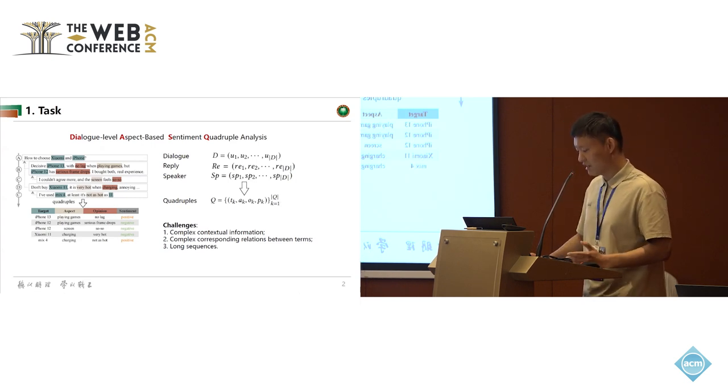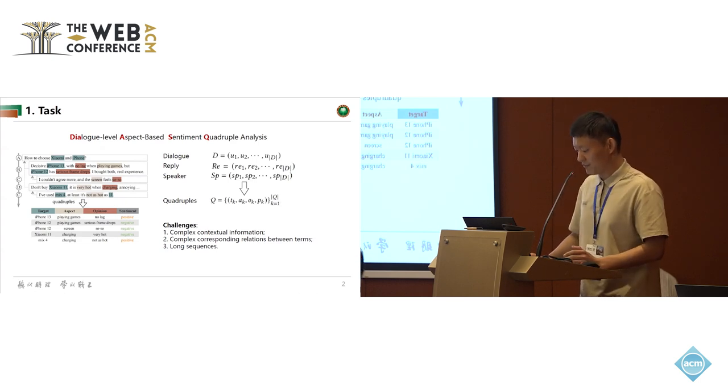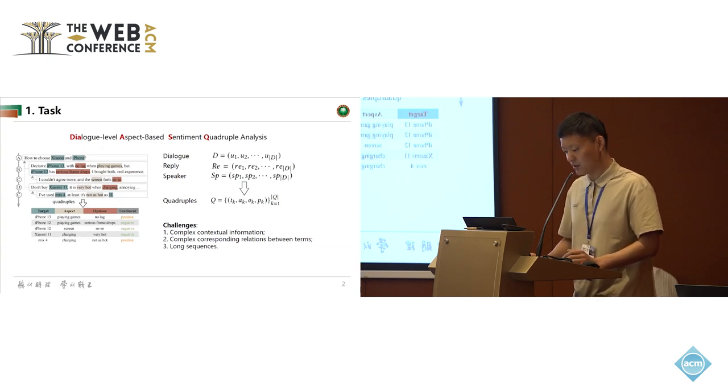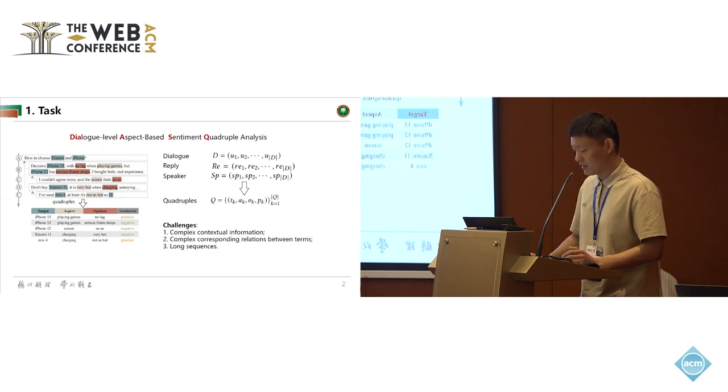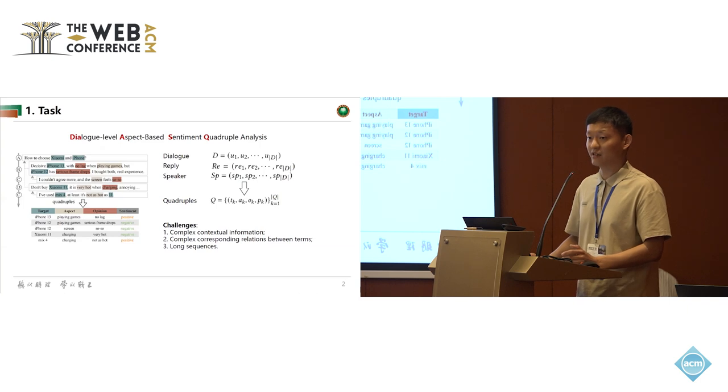The target term denotes the evaluated object, such as iPhone 13. The aspect term denotes a specific aspect or attribute, such as screen. The opinion term denotes a word or phrase to evaluate a specific aspect, such as so-so. The sentiment polarity can be divided into three types: positive, negative, and neutral.